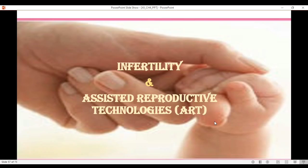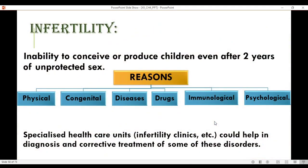The last and most important part of this chapter is infertility and assisted reproductive technologies or ART. Inability to conceive or produce children even after two years of unprotected sex and cohabitation is called infertility. There can be many reasons — physical, congenital, diseases, drugs, immunological or psychological reasons.